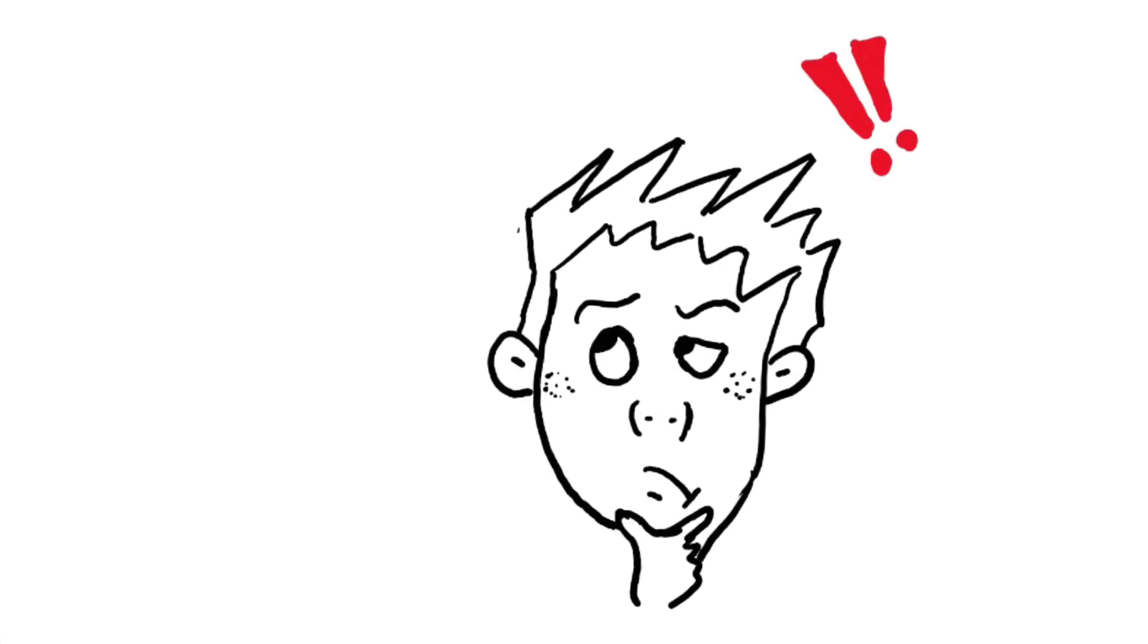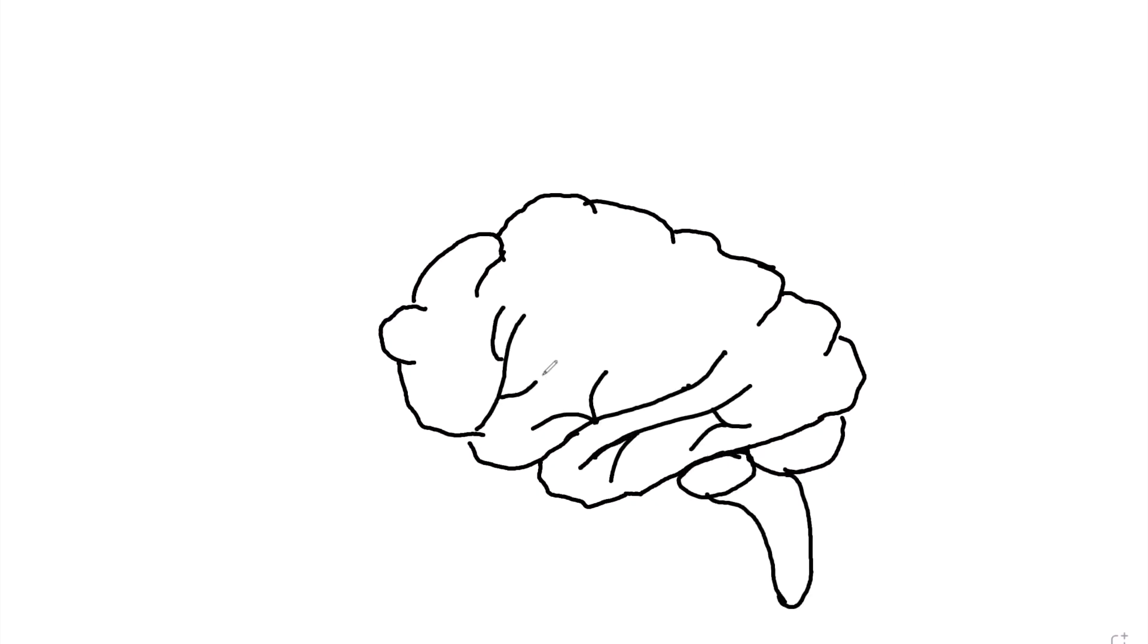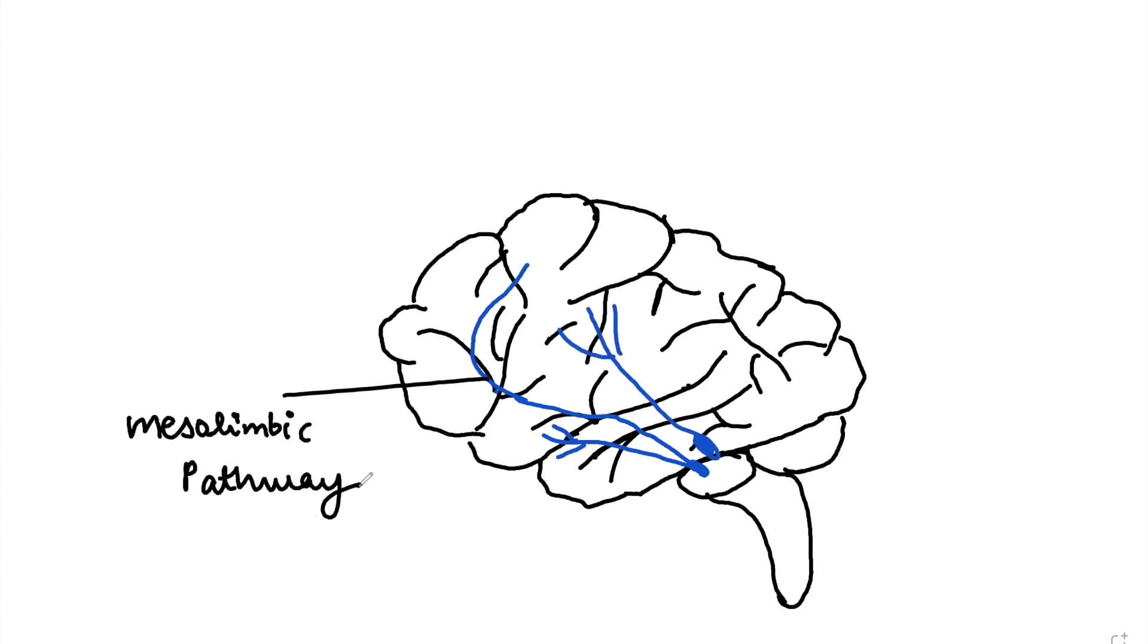But you may be wondering, why does it happen? This is because of the mesolimbic dopamine system, or in simple terms, the reward system of the brain. Whenever we experience pleasure, like the sweet enjoyable sensation of sugar, this system releases a chemical messenger called dopamine.